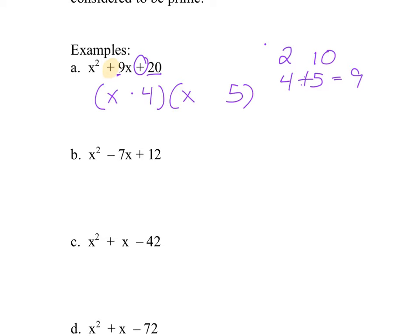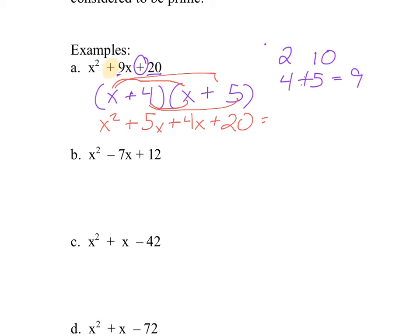That first operation determines whether I put pluses or minuses into both parentheses. Since it is a plus, I put plus in both. Now I FOIL this to check: x times x, x times 5, 4 times x, 4 times 5. Sure enough, I get x squared plus 9x plus 20. So that's a check.